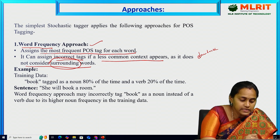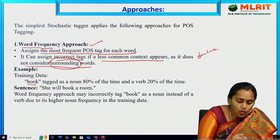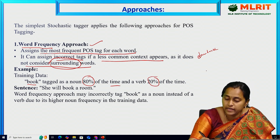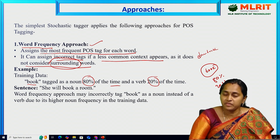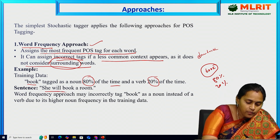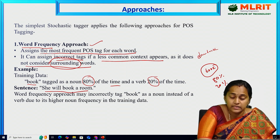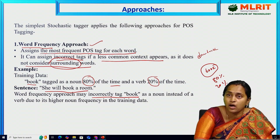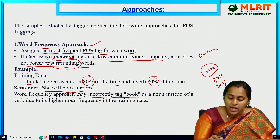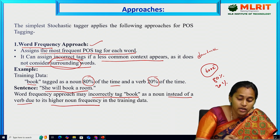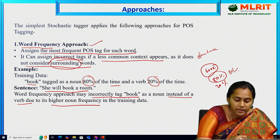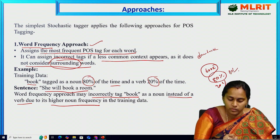For example, I am taking data that contains the word 'book'. 'Book' is tagged as a noun 80 percent of the time and as a verb 20 percent of the time in the training dataset. Now consider the sentence: 'She will book a room.' The word frequency approach incorrectly tags 'book' as a noun, but here 'book' is acting as a verb. It is incorrectly tagged as a noun due to the higher noun frequency given in the training data.